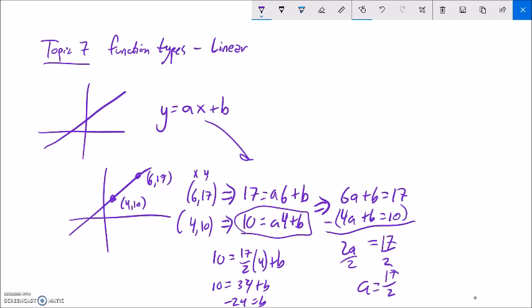So my equation, then, would be y equals 17 halves x minus 24. And it's easy to check. Plug those points back in. Plug in the 4, you should get a 10 out. Plug in the 6, you should get a 17 out.